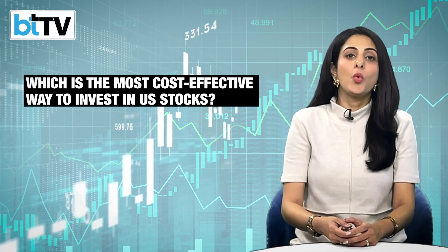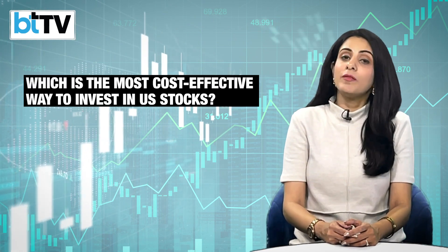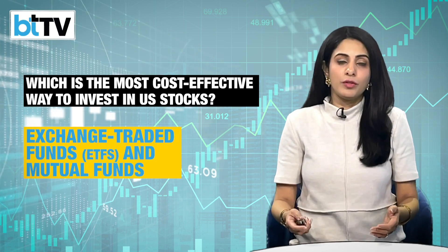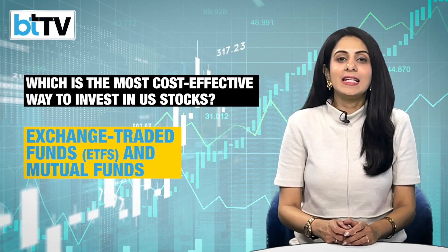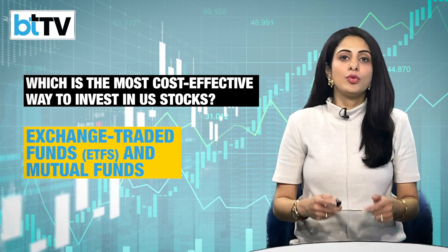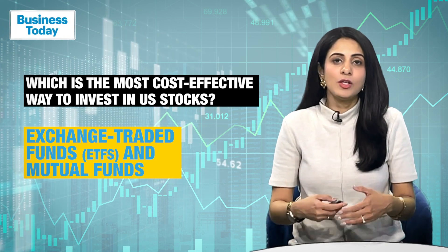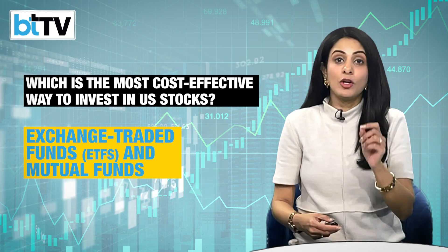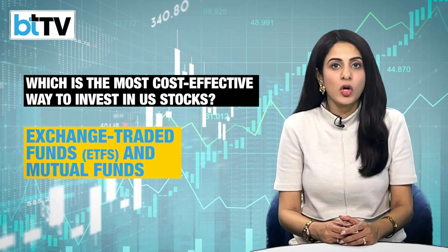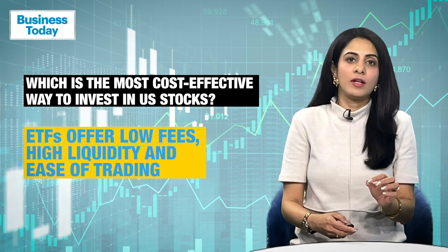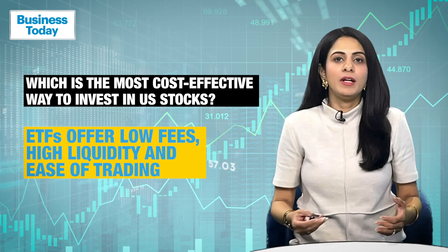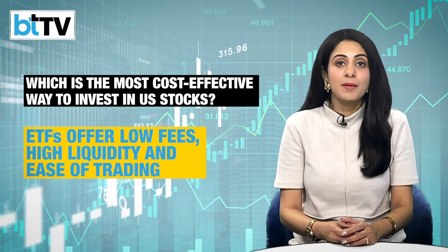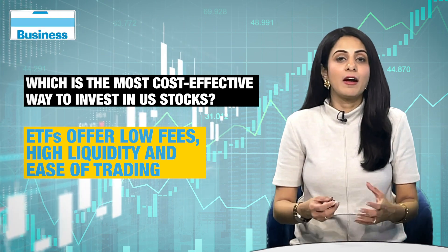When it comes to international investing, what is the easiest and most cost-effective way to invest in global brands and their stocks? For most Indian investors looking to diversify by investing in US stocks, the easiest and most effective way is via exchange traded funds, or ETFs, and also mutual funds. These investment vehicles offer a simple, efficient, and low-cost way to gain exposure to a wide range of US stocks and other global markets. ETFs in particular have become increasingly popular due to their low fees, high liquidity, and ease of trading, making them a convenient building block of a globally diversified portfolio.